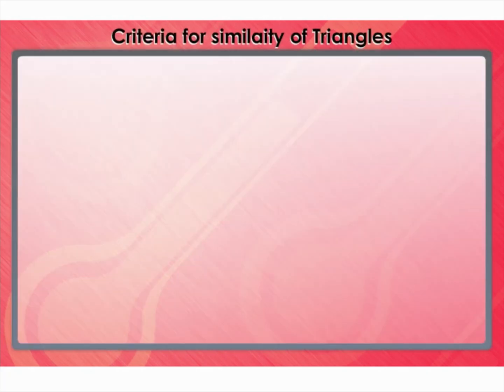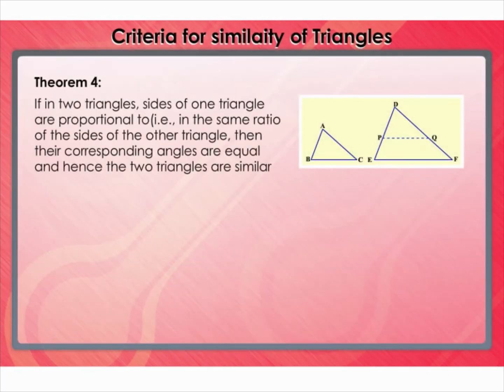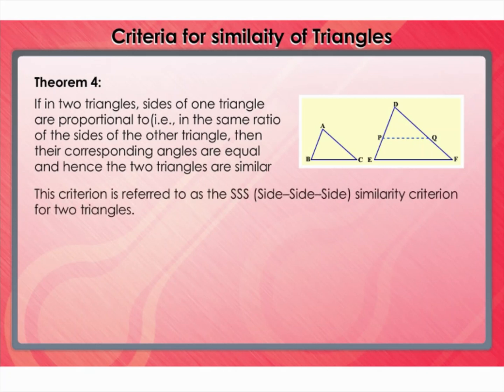Criteria for similarity of triangles. Let's move to the next criterion. Theorem 4: If in two triangles, the sides of one triangle are proportional to the sides of the other triangle, then the corresponding angles are equal and hence the two triangles are similar. This criterion is referred to as the SSS (side-side-side) similarity criterion for two triangles.